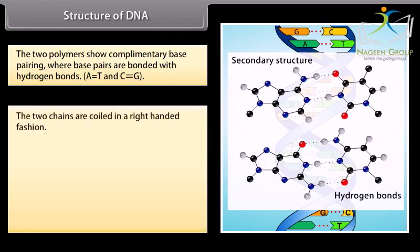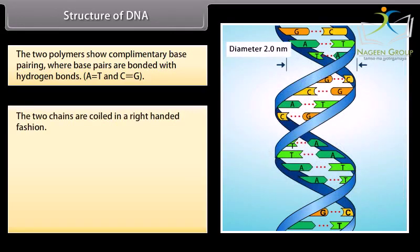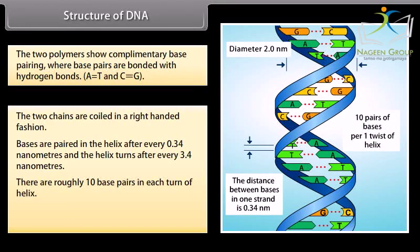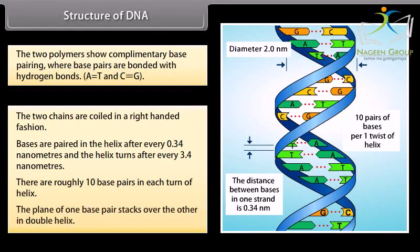The two chains are coiled in a right-handed fashion. Bases are paired in the helix after every 0.34 nanometers and the helix turns after every 3.4 nanometers. There are roughly 10 base pairs in each turn of the helix. The plane of one base pair stacks over the other in the double helix.